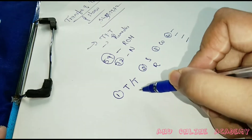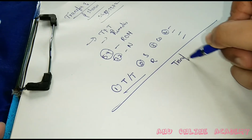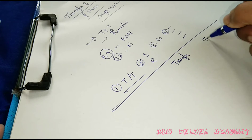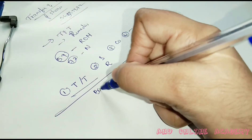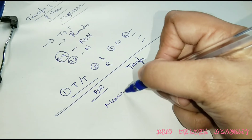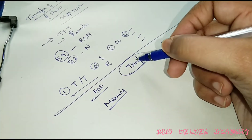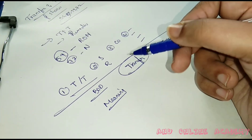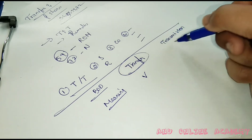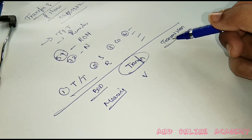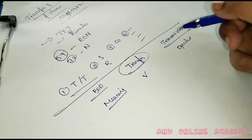Transfer versus transmission: transfer of shares means a voluntary change in ownership of shares by intention of parties. Transmission means a change in ownership by operation of law, such as death or insolvency.